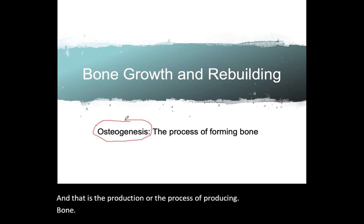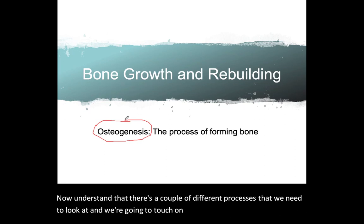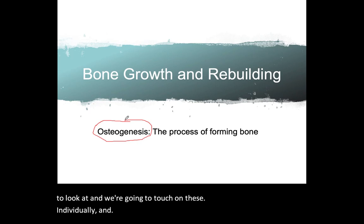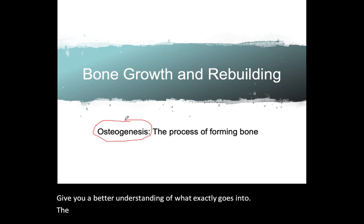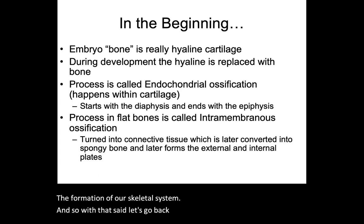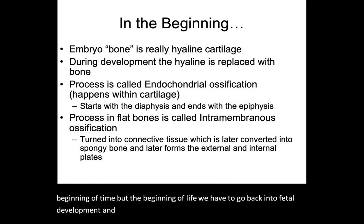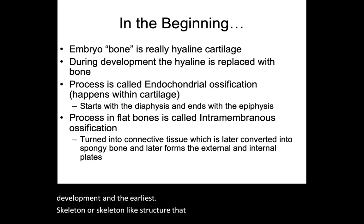Now, there are a couple of different processes that we need to look at, and we're going to touch on these individually to give you a better understanding of what exactly goes into the formation of our skeletal system. Let's go back to the beginning of life — fetal development. The earliest skeleton or skeleton-like structure that we have during fetal development is made out of hyaline cartilage.